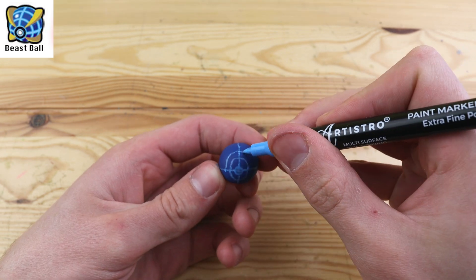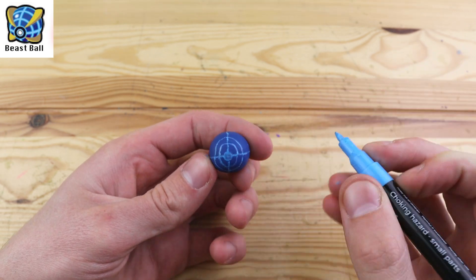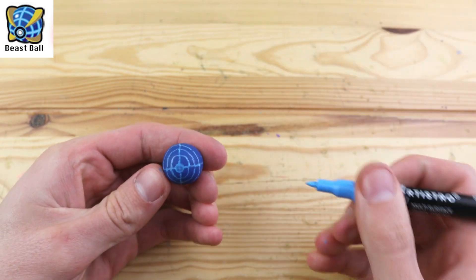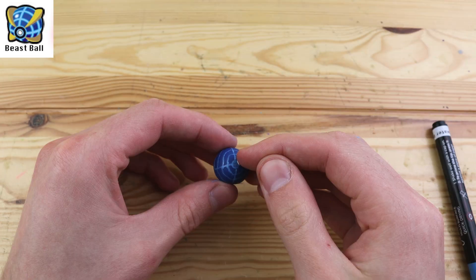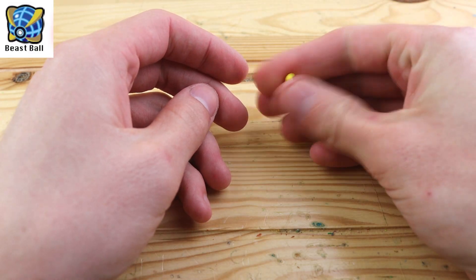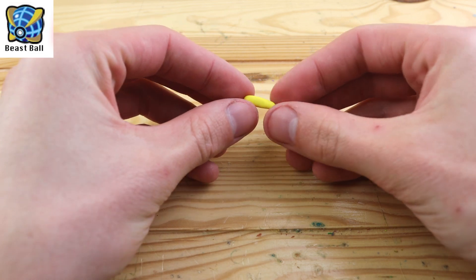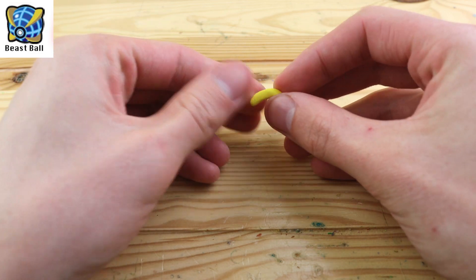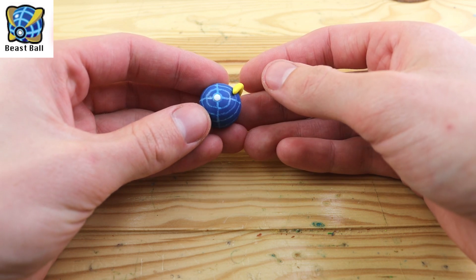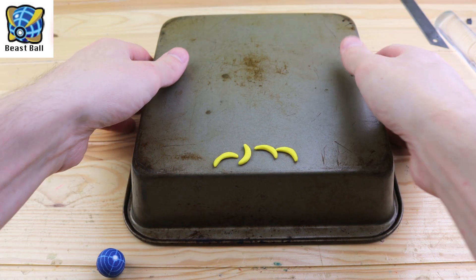So I decided to go for this paint marker. And I think that it worked out pretty well. It's not perfect, but it's a lot better than it would have looked with clay. Let's take some yellow clay to make these little pieces that go around the Pokéball. They sort of look like bananas. And we'll get them into the right shape we need. And then we can bake them and glue them on.